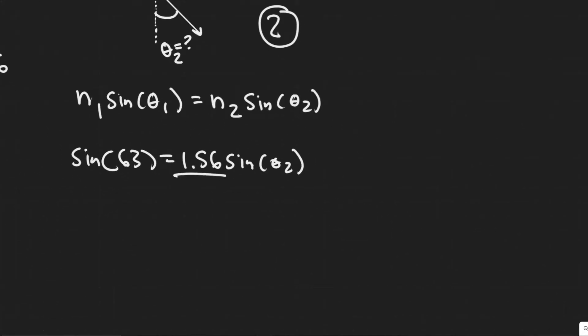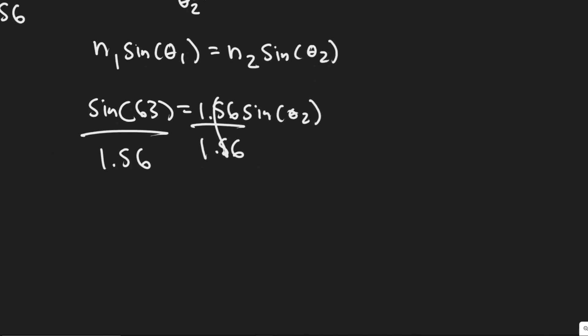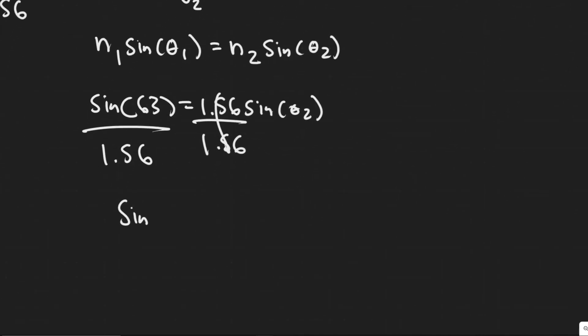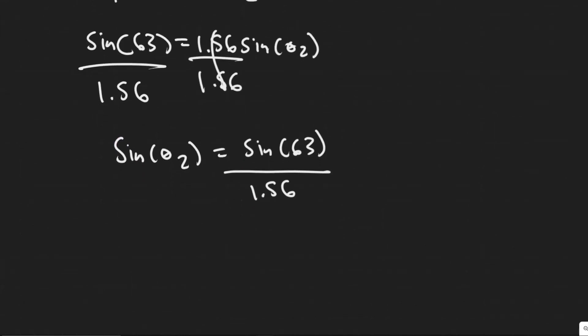To solve, you're going to divide both sides by 1.56. So we have the sine of theta 2 equals the sine of 63 divided by 1.56. To get rid of the sine here, because all we want is the theta, you would just take the arc sine of both sides.